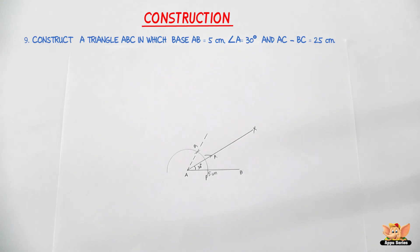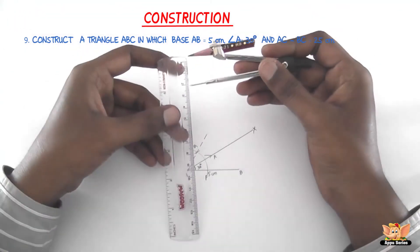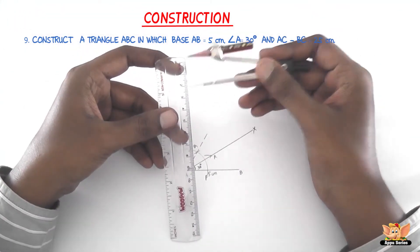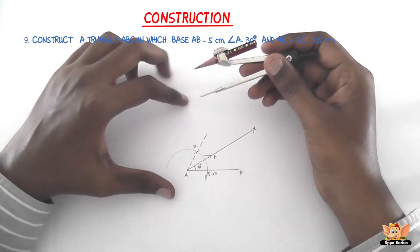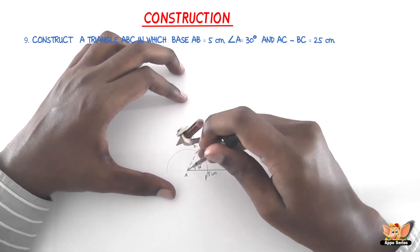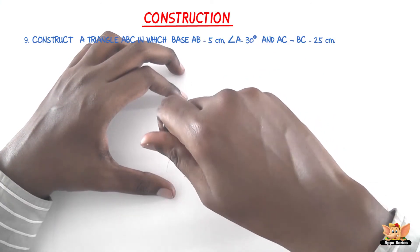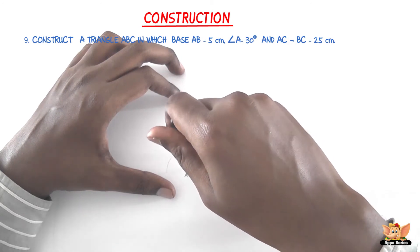So the next step is from the ray AX, we need to cut off line segment AD which is 2.5 cm. That is AC minus BC. So let us now measure 2.5 cm on the compass. So now I've measured 2.5 cm on the compass. Let us cut off 2.5 cm on the line segment AX. Here it is.